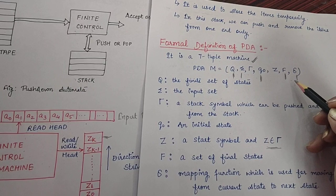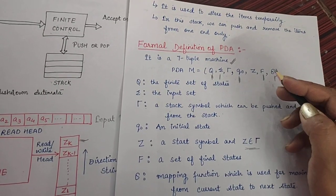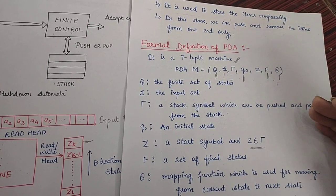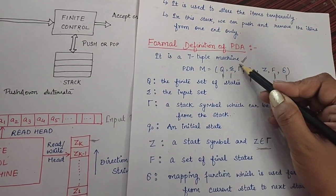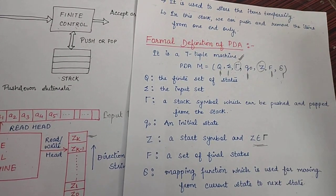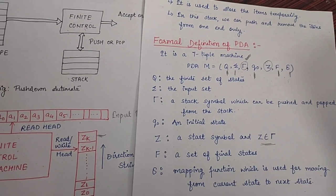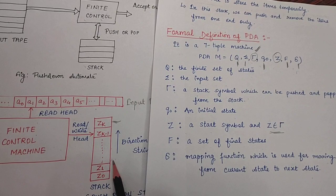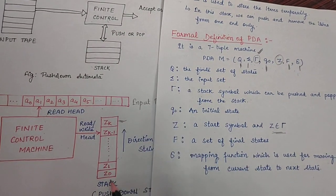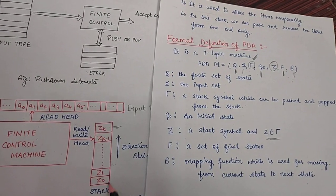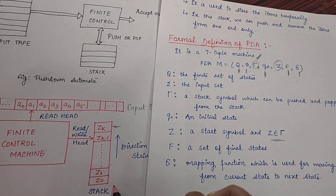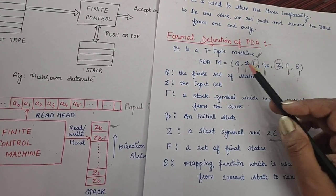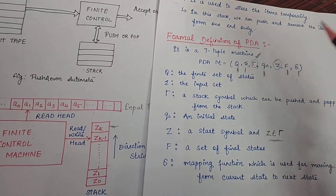Delta, as we know, defines the transition, how one state will change to another state on given input symbol. Now, the question is what are these two symbols used for? Since we know that there is one more component which is called a stack, the symbols which are added to this stack and the initial symbol of the stack. To keep track of this, we are using two more symbols in this PDA.